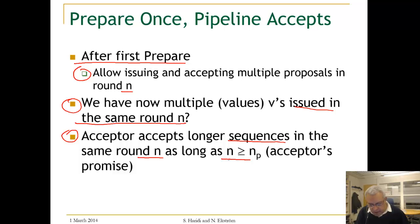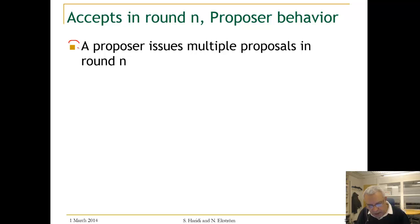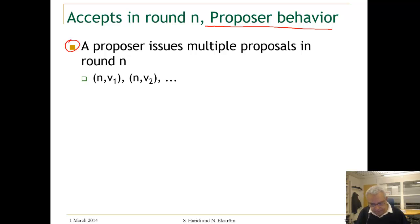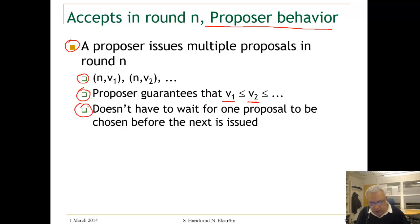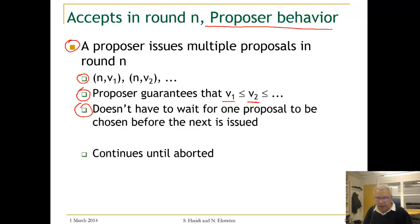This is valid as long as the round number n is greater than or equal to the promise of the acceptors. A proposer issues multiple proposals in round n, and it only guarantees that sequence v2 is longer than v1, and v3 is longer than v2. Importantly, it does not wait for one proposal to be chosen before the next is issued, and it continues this way until aborted.